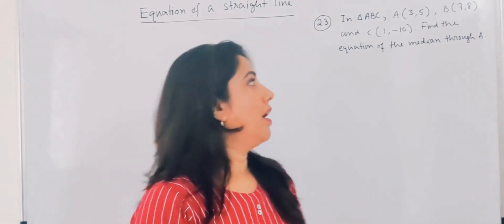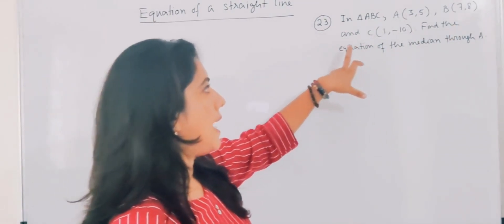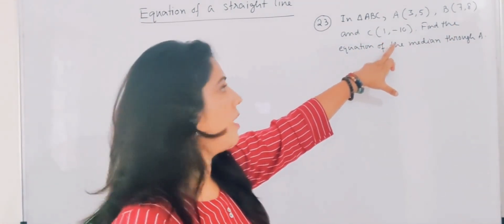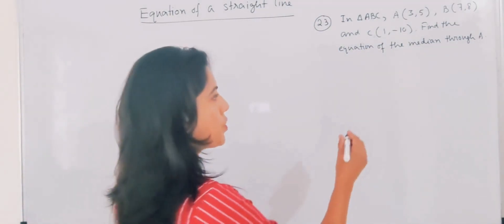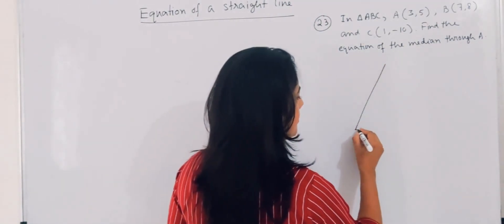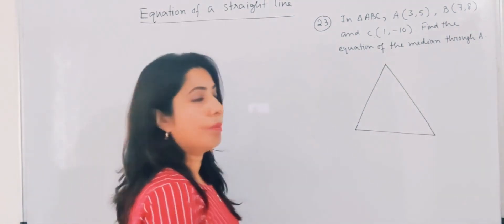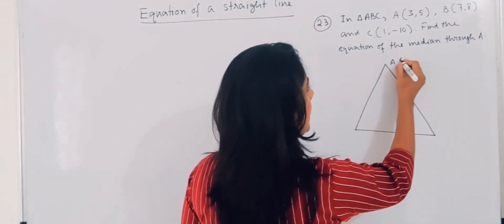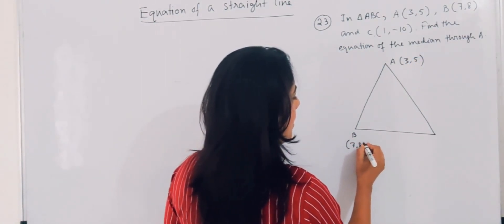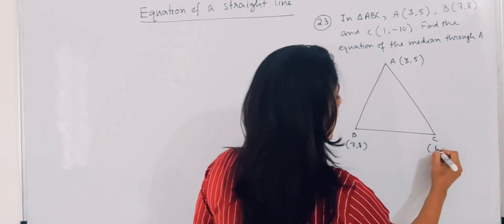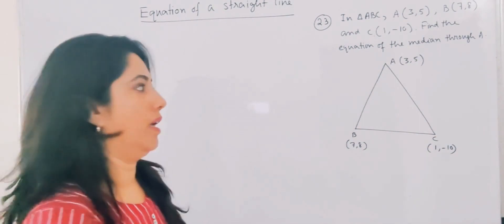Question number 23. In triangle ABC, A is (3,5), B is (7,8) and C is (1,-10). Find the equation of the median through A. This is a very important sum — it has come in the 2013 board paper. They are saying find the equation of the median through A.